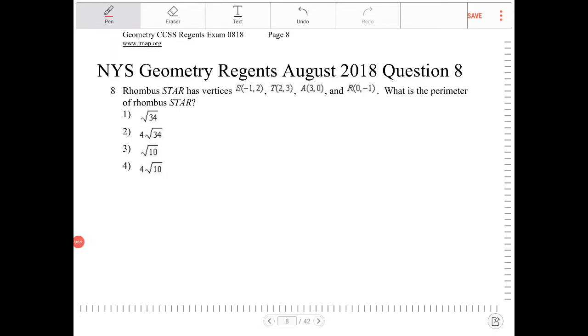Rhombus STAR has vertices S(-1,2), T(2,3), A(3,0), and R(0,-1). What is the perimeter of rhombus STAR?